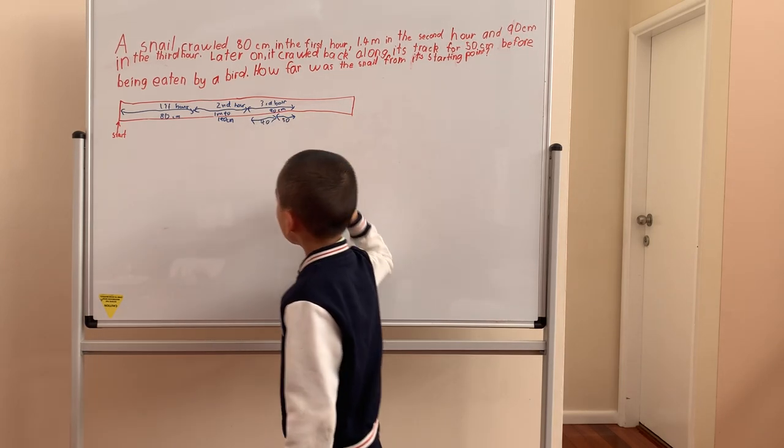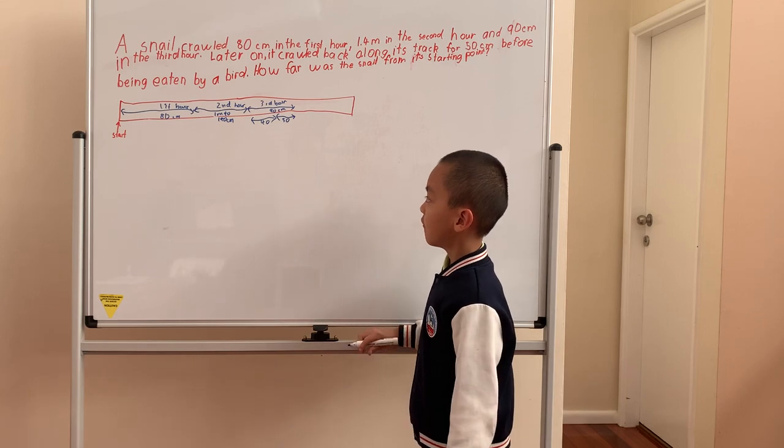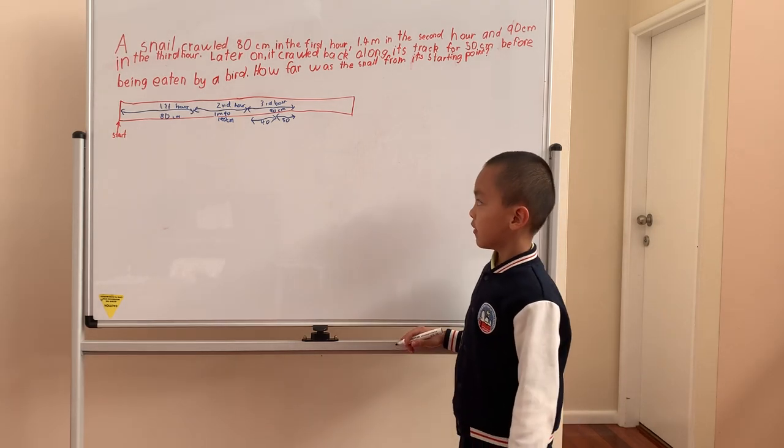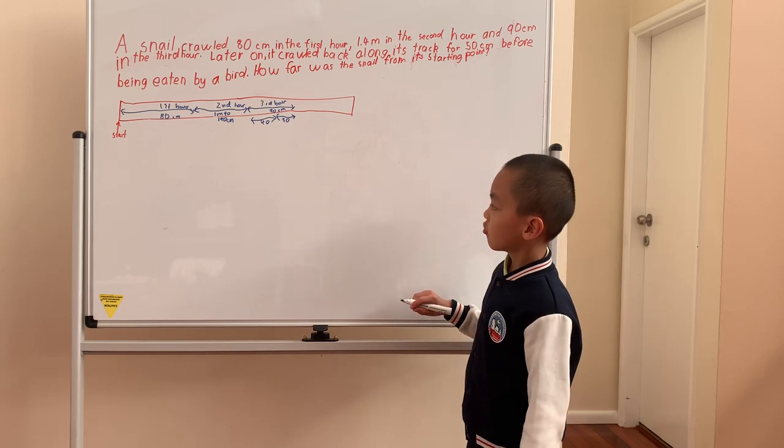So this is 40cm. So now, we can add 80 and 140, which is 220. And then add 40 to 220, which makes 260.